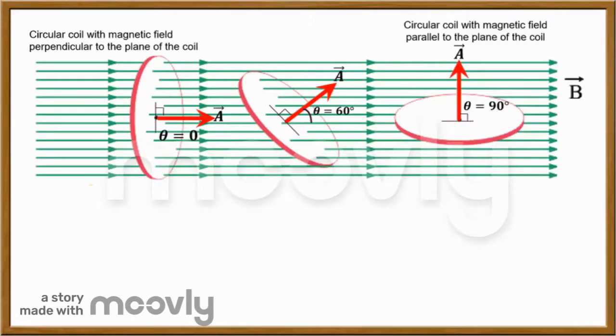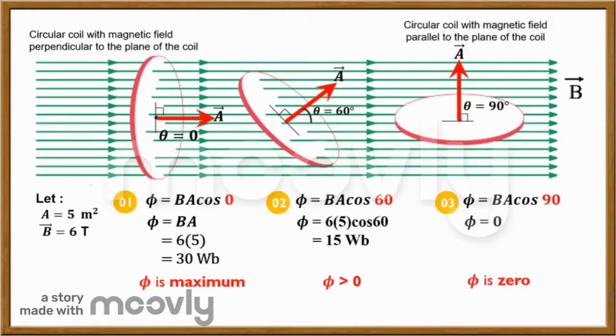Let's say there are three different orientations between the magnetic field and the plane of coil. The first is if the plane of coil is perpendicular to the magnetic field. The second is if the plane is 30 degrees to the magnetic field. And the third is if the plane is parallel to the magnetic field. Let's say the surface area is 5 meters squared and the magnetic field is 6 Tesla.